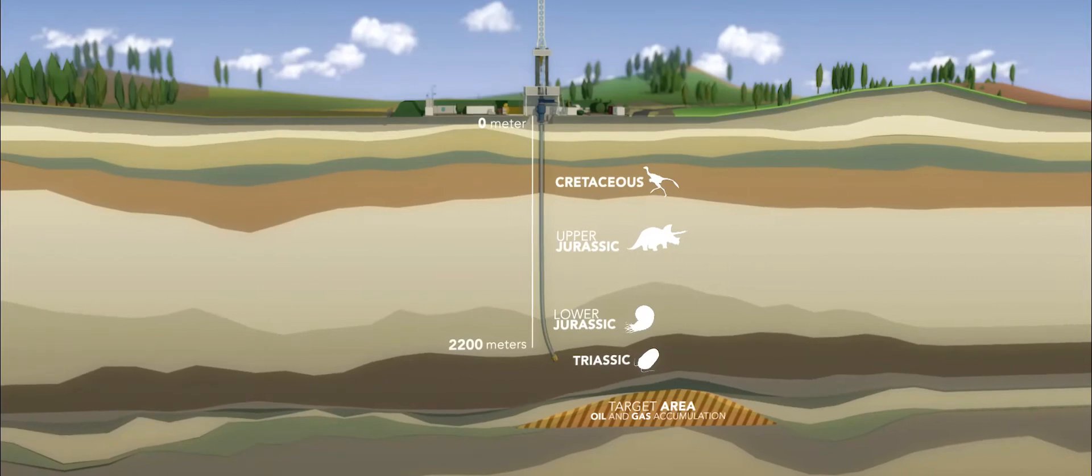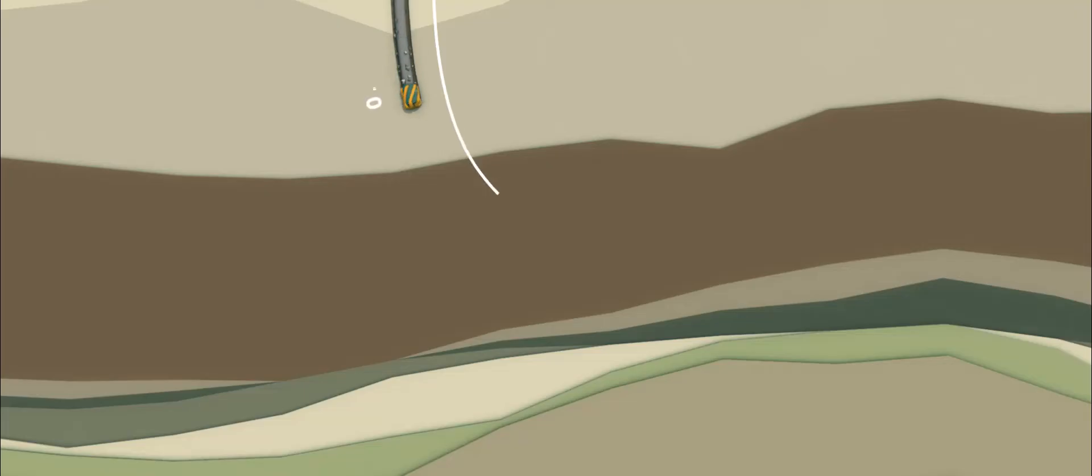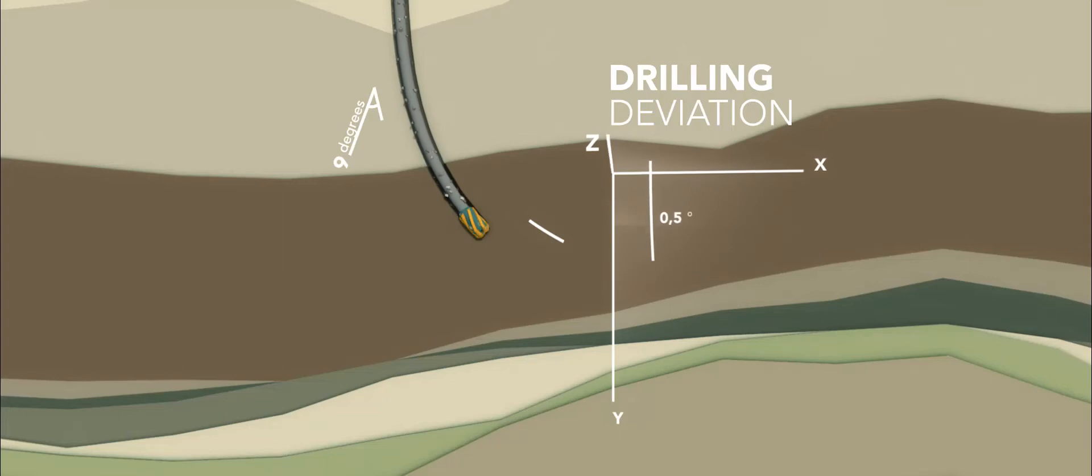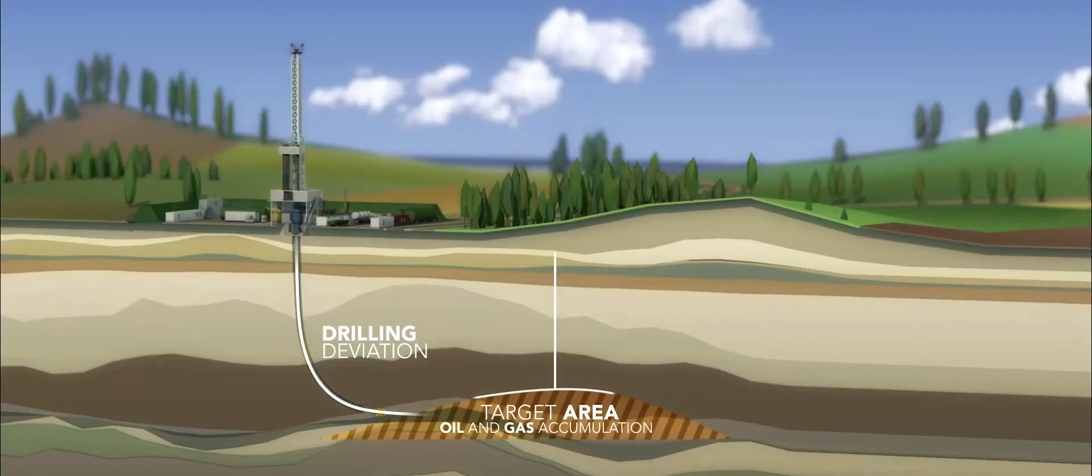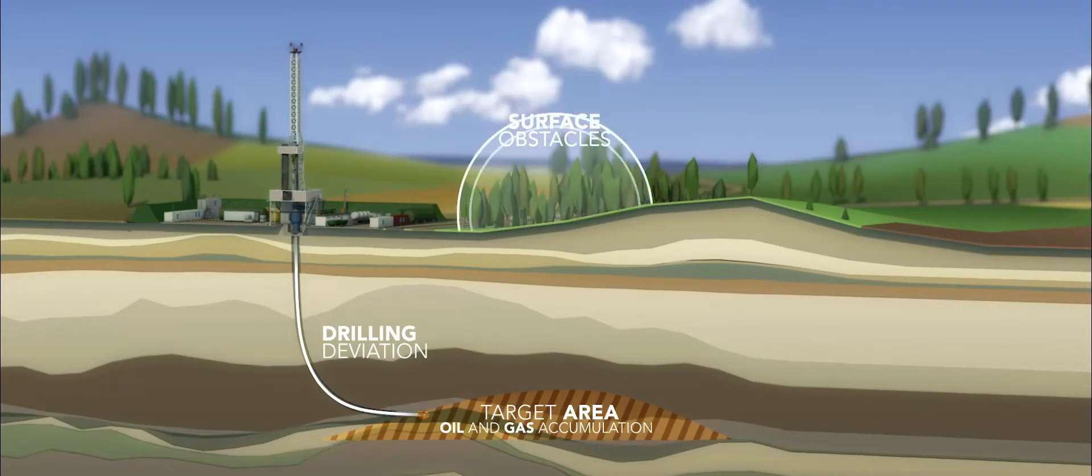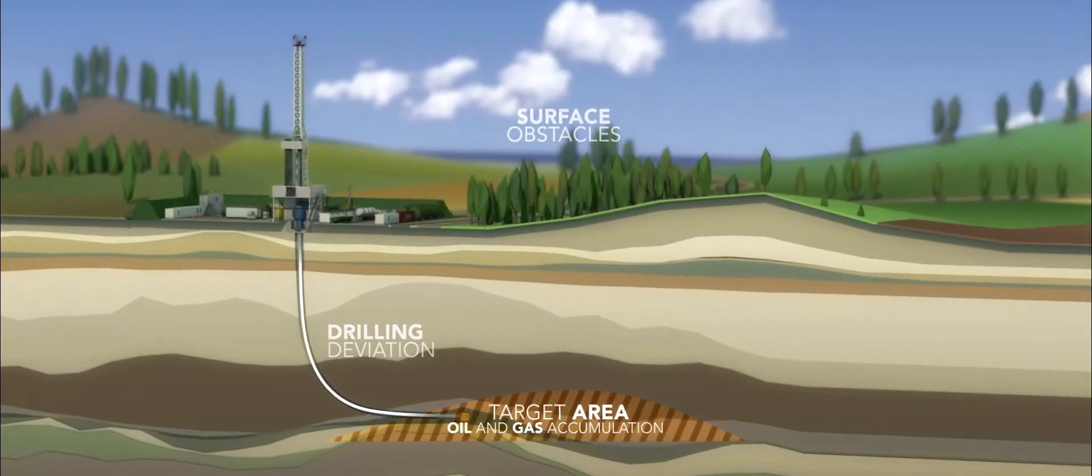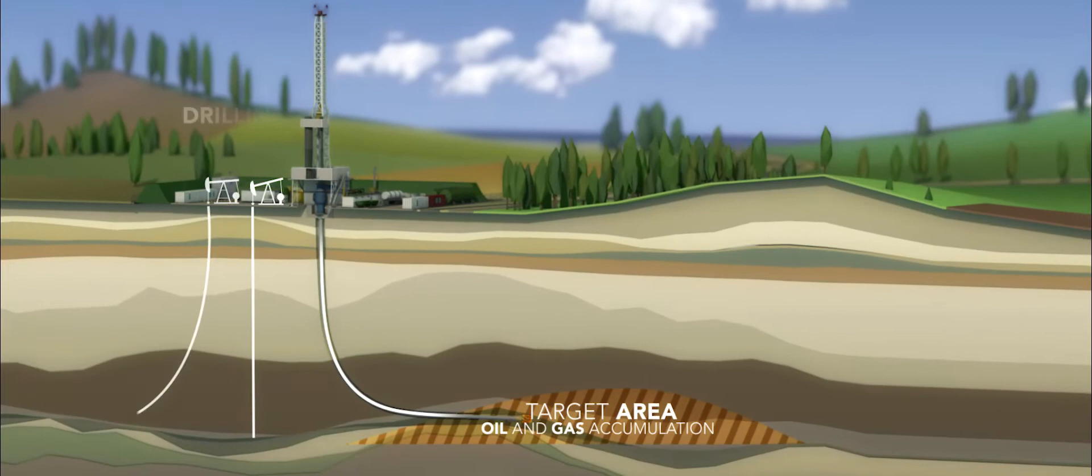The borehole can be drilled vertically through the ground or in a curve by causing a small deviation of the drill bit, which the drill string will then follow. This technique is especially used to avoid surface obstacles and to limit the impact on the environment.